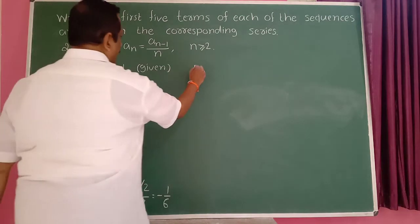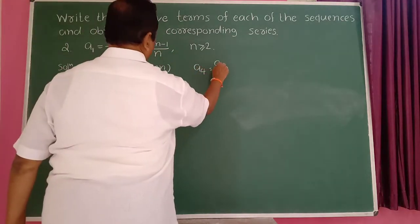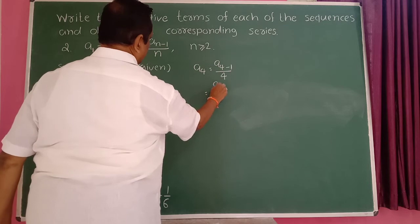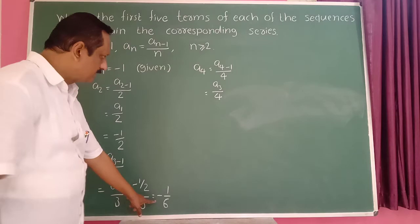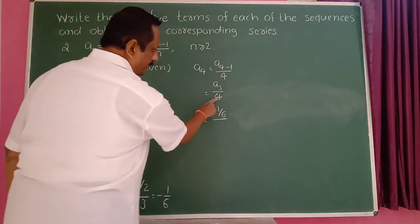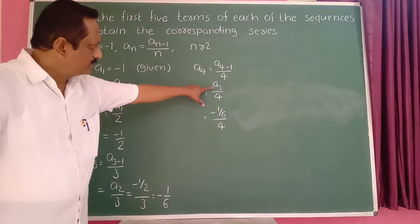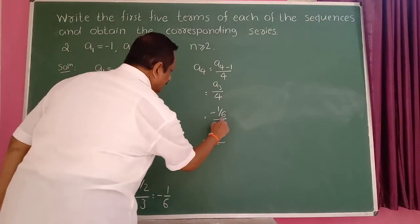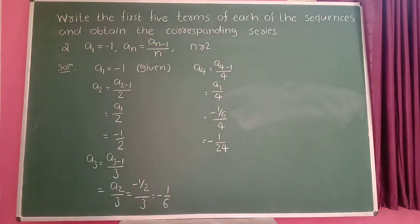Next, a_4. Put n equal to 4. So a_4 is equal to a_(4-1) divided by 4, which is a_3 divided by 4. But a_3 is minus 1 by 6. So minus 1 by 6 divided by 4, taking 6 to the denominator gives minus 1 upon 24.